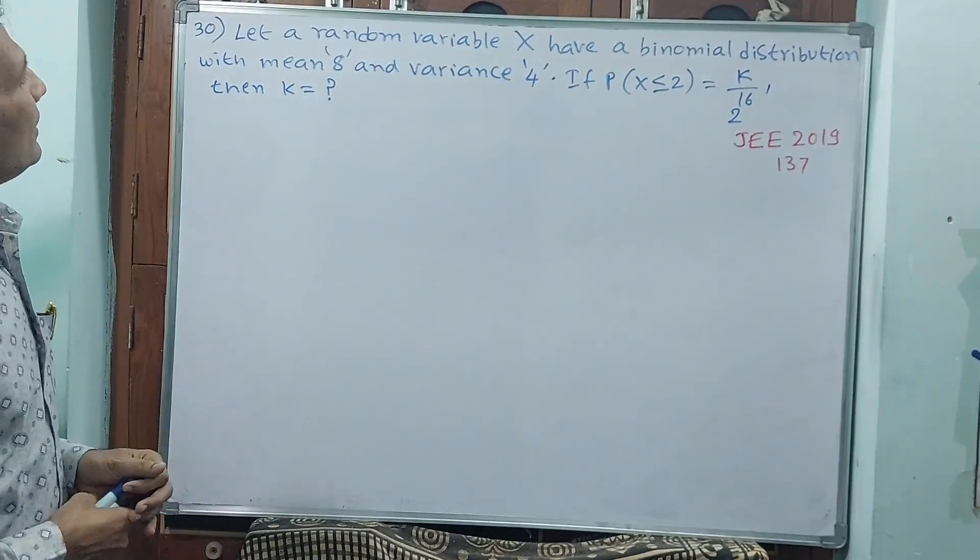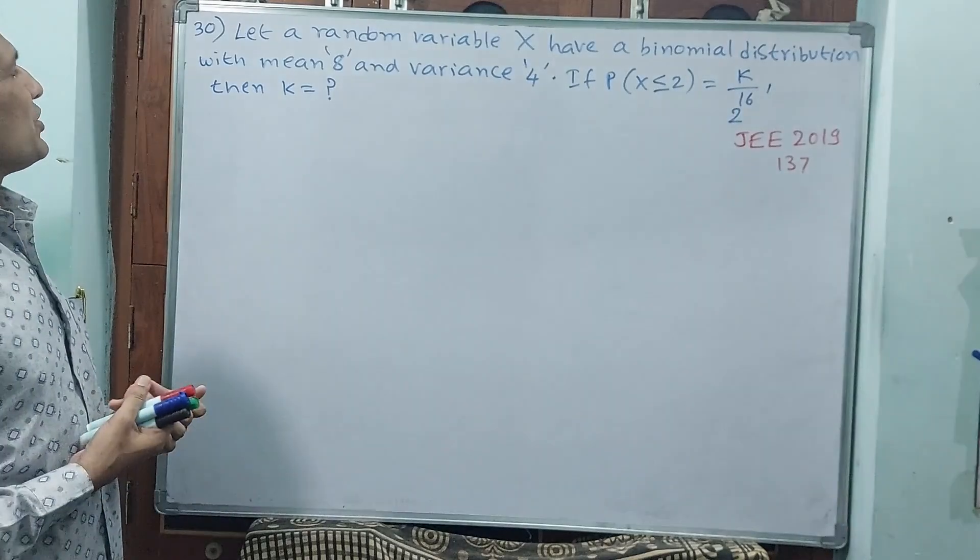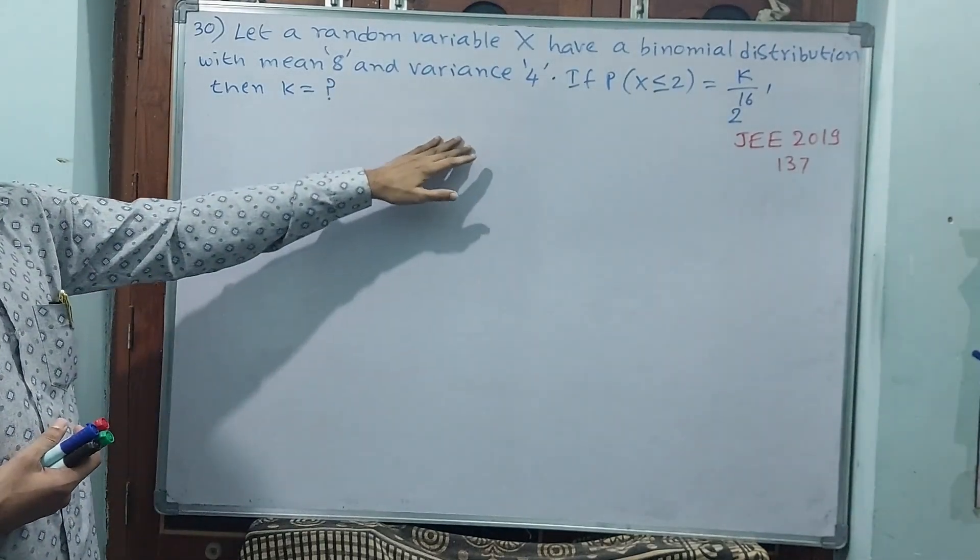See question number 13. Let a random variable X have a binomial distribution with mean 8 and variance 4.